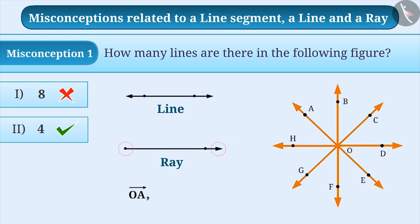Here, OA, OB, OC etc. are rays. In brief, we can say that a line has two arrows and a ray has one arrow.